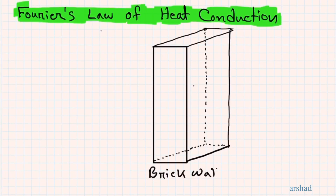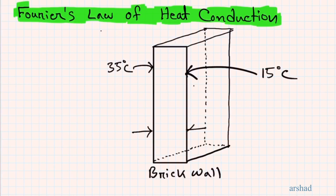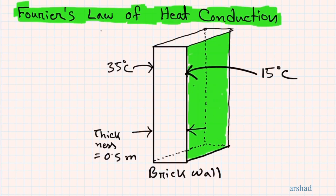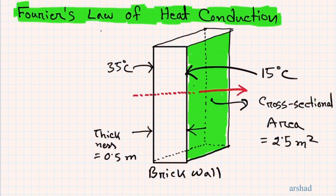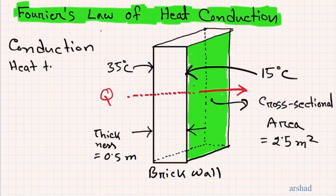In this video we are going to learn about Fourier's law of heat conduction. Let's start with a brick wall where we know the temperatures of the two sides — 35°C and 50°C for example. We also know the thickness of the wall and the cross-sectional area. For a plain wall, the cross-sectional area and the surface area are the same. With these parameters and Fourier's law, we can calculate the amount of heat transferred in the direction marked by the red arrow.